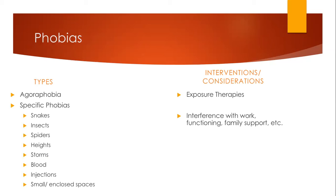Phobias, as we mentioned, are irrational fears of objects, people, or situations that cause avoidance of that particular thing that causes fear. You can have a phobia to anything, but the most common phobias are agoraphobia, which is the fear of leaving the house, standing in line, being in crowds, being in enclosed spaces, or using public transportation. The main thing is that individuals feel that if they do these things, bad things may happen and that escape from that bad situation will be impossible, leading to avoidance.